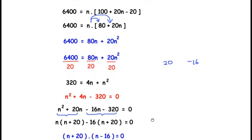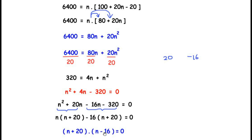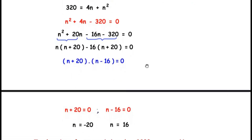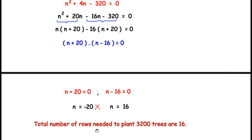This gives the two factors: (n + 20)(n − 16) = 0. So n = −20 or n = 16. Since n represents the number of rows, it cannot be negative. Therefore n = 16, and the total number of rows needed to plant 3200 trees is 16.